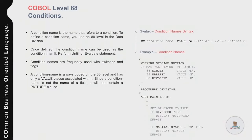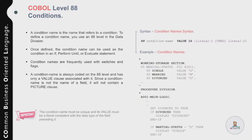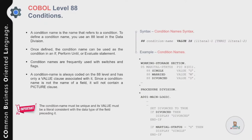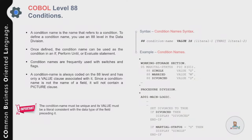In the Procedure Division, the paragraph A001-MAIN-LOGIC uses the condition name DIVORCED directly: 'IF DIVORCED DISPLAY divorce-message END-IF.' If you don't want to use level-88 conditions, you can instead write 'IF MARITAL-STATUS EQUAL TO S DISPLAY SINGLE.' The condition name must be a unique name, and its value must be a literal consistent with the data type of the preceding field.